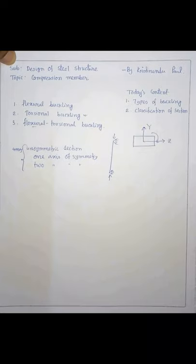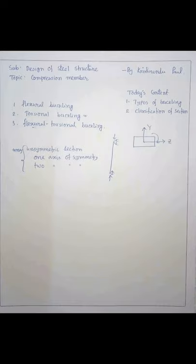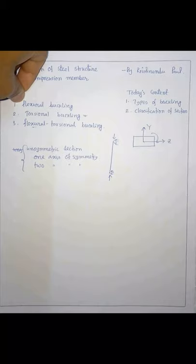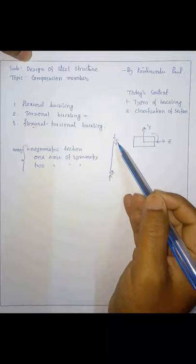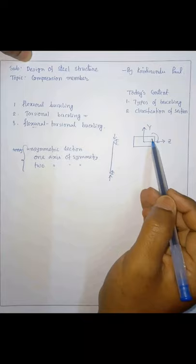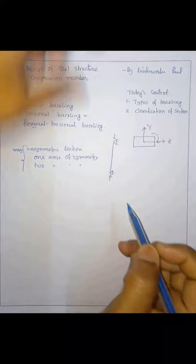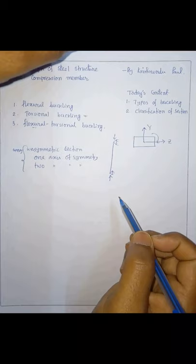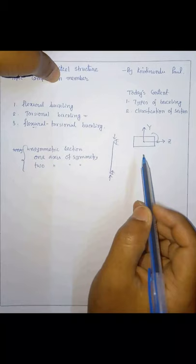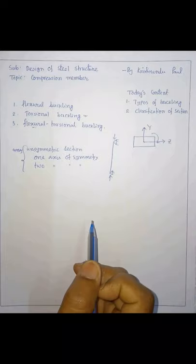Consider a compression member hinged at both ends. Its cross-section has two axes: the z-axis and y-axis, and the longitudinal x-axis. If we apply compression, the member may buckle about its weak axis. There are two axes — z-axis and y-axis — and it will buckle about the weak axis. The concept of weak and strong axes has been explained in previous lectures.